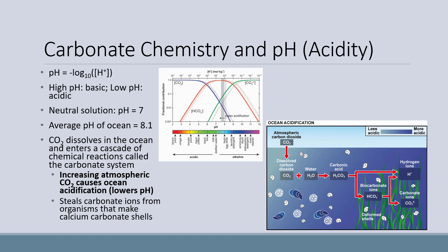pH is the negative log of the concentration of hydrogen ions, also known as protons, in solution. pH occurs on a scale of 0 to 14 with 7 being neutral. A high pH means that the number of protons is low and the solution is basic, while a low pH means the number of protons is high and the solution is acidic. The average pH of the ocean is 8.1, so it's slightly basic. Once CO2 dissolves in the ocean, it enters a cascade of chemical reactions called the carbonate system. CO2 dissolving in water will form carbonic acid, bicarbonate, or carbonate — which form is dominant depends on the pH.